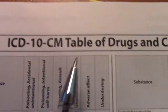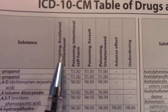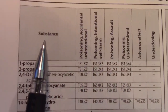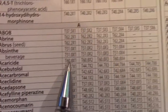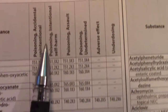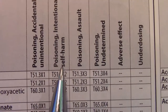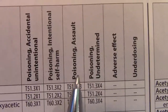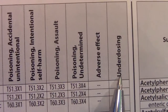With this ICD-10-CM Table of Drugs and Chemicals, as long as you know what each of these columns stands for, you identify your substance first — they're in alphabetical order — and you go across the table based on whether it was a poisoning unintentional, intentional, assault, undetermined, adverse effect, or underdosing.